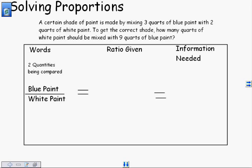This is one of the biggest mistakes made on solving proportions. If you write it down, you'll be a lot less likely to make that mistake. The ratio given here is three to two. Three quarts of blue paint to two quarts of white paint. The three is the blue, that's why it's on top. The two is the white, that's why it's on bottom.